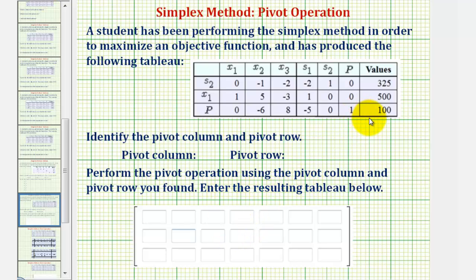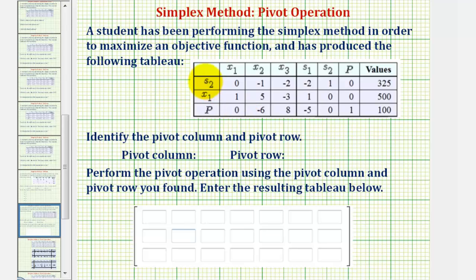Before we identify the pivot column, notice how we have these labels on the far left, which are the variables associated with each row. These are the active or basic variables, so our basic variables are s sub two, x sub one, and p. These would also be the columns that contain only a one and zeros. I mention this because once we perform our pivot operation, the active variables will change, so we'll change our labels here on the far left.